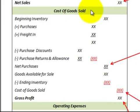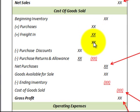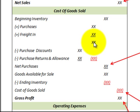Let's look at the next section: cost of goods sold. We have a beginning inventory — what was held over from the previous year. We add the purchases made for the period plus the freight in for those purchases. Then we subtract the purchase discounts and the purchase returns and allowances to come up with net purchases.